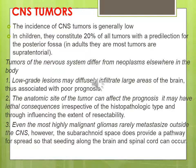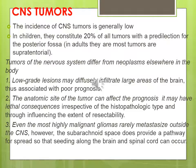Even the most highly malignant gliomas rarely metastasize outside the CNS. The CNS is a common home for secondary metastasis. While the primary CNS tumor rarely metastasizes outside, the tumor of the brain may metastasize to the spinal cord and vice versa. However, the subarachnoid space does provide a pathway for seeding along the brain and spinal cord.